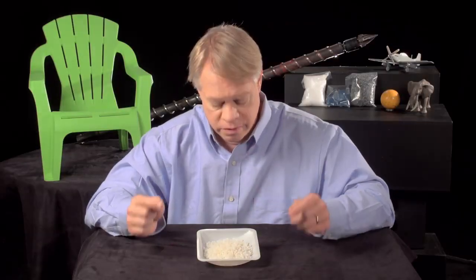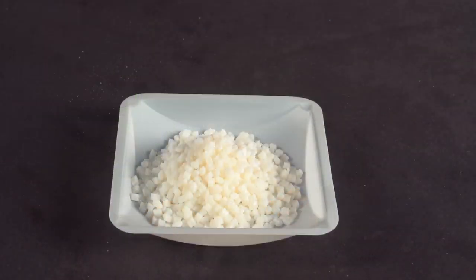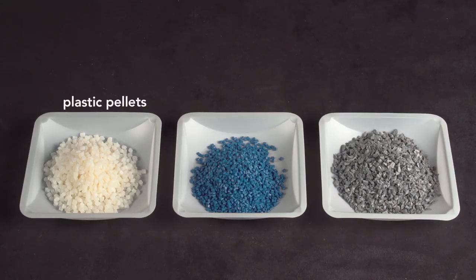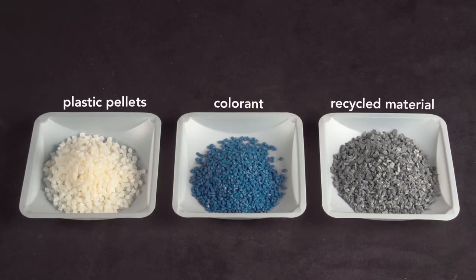All injection molded objects start with these plastic pellets, which are a few millimeters in diameter. They can be mixed with small amounts of pigment, called colorant, or with up to 15% recycled material then fed into the injection molding machine.